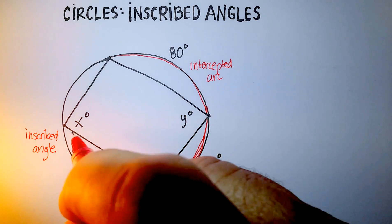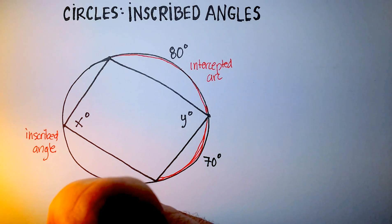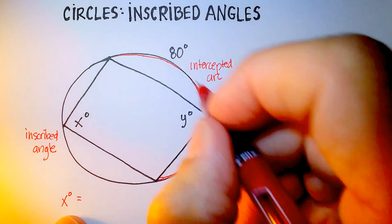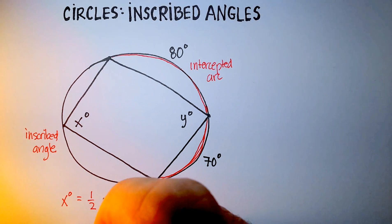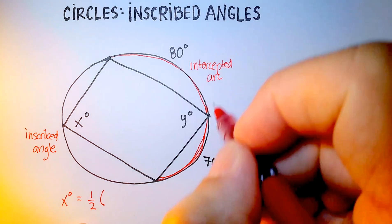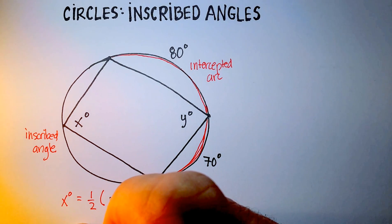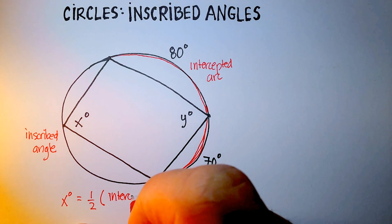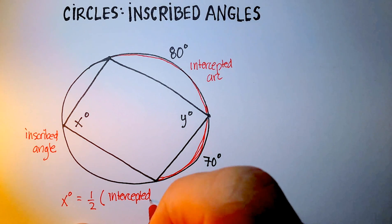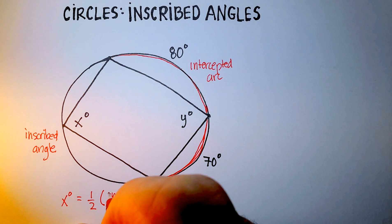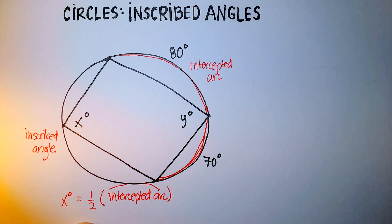And remember that the formula is that x, the measure of angle x, is going to be equal to one half the measure of the intercepted arc. Remember that the symbol for the intercepted arc is that.